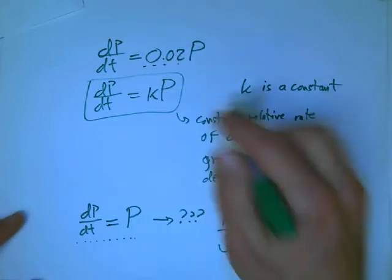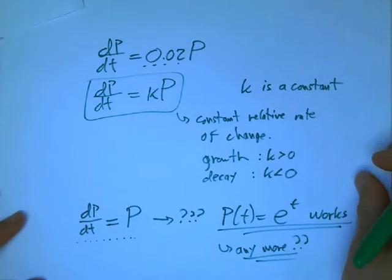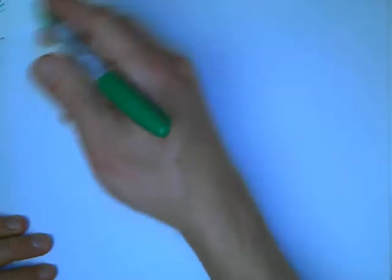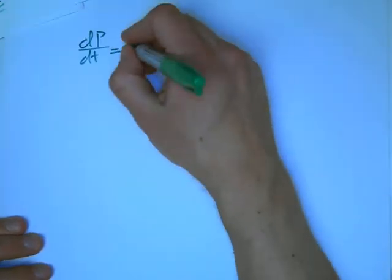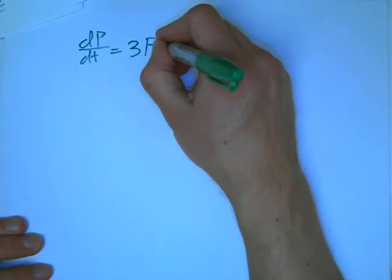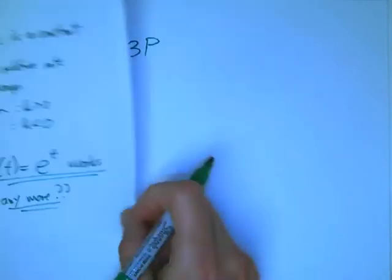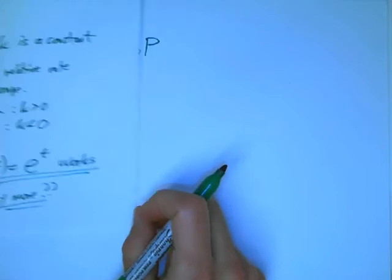And then the question is, are there any more? And I think I'll save that for a different video because I want to at least get to this version of the story. There's not that many more and we'll be able to find them. But okay, what about dp/dt equals, let's not go to the 0.02 yet, let's say 3P.